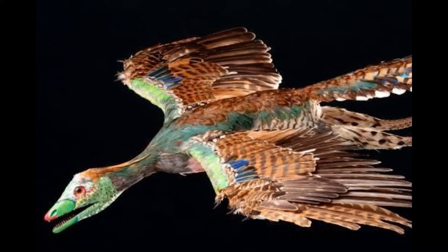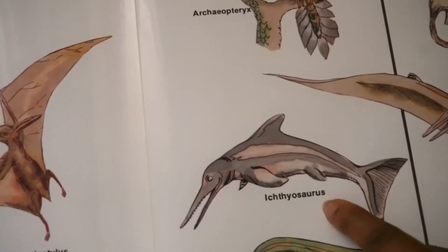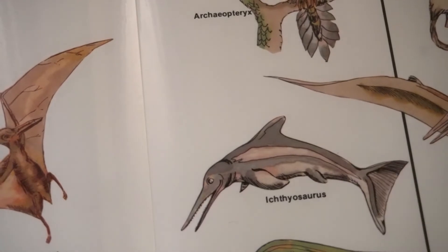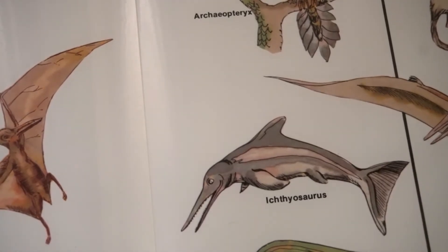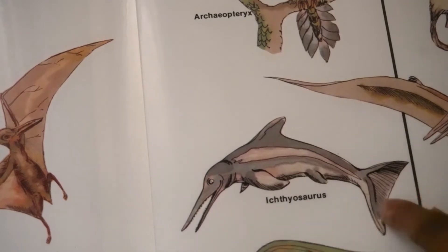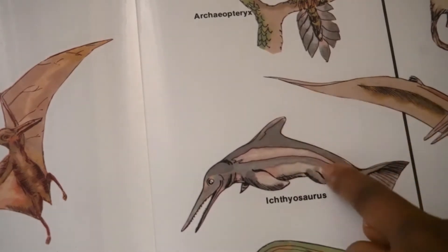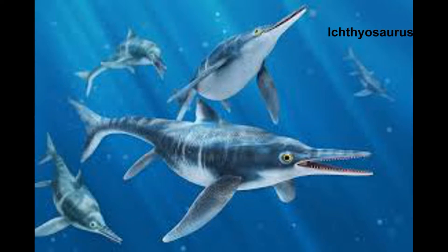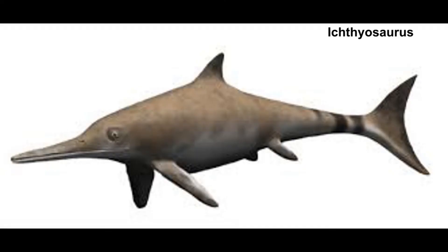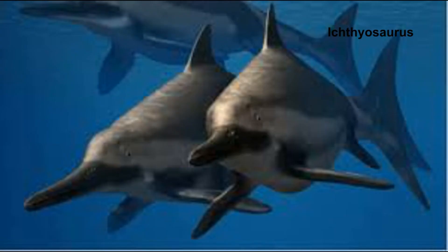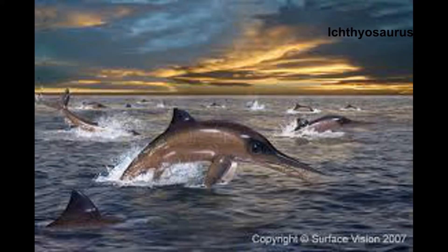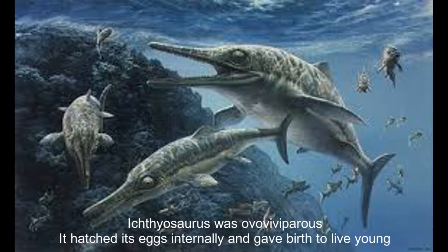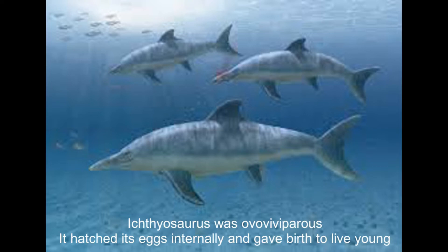The Ichthyosaurus was an aquatic reptile of the Jurassic seas. It resembled a porpoise with its flippers, fish-like tail, and dorsal fin. It measured 24 feet in length, had no gills, and breathed air through its nostrils. Ichthyosaurus never ventured on land even to lay eggs. Instead, it hatched its eggs internally and gave live birth to its young in the water.